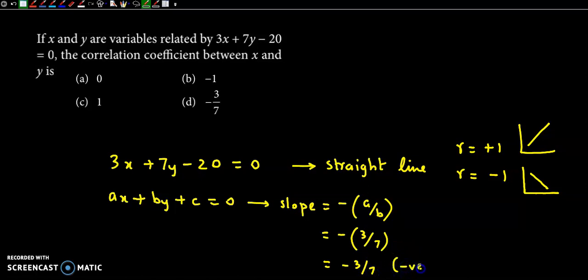Which is a negative value. Toh, yeh haan par r ki value hooghi, minus 1. So, the correct answer is option b, minus 1.